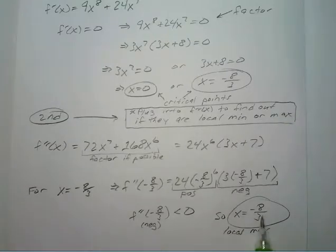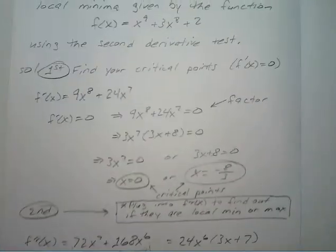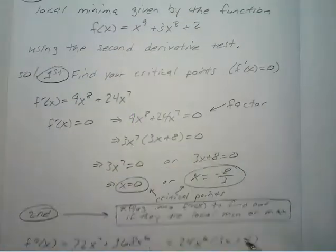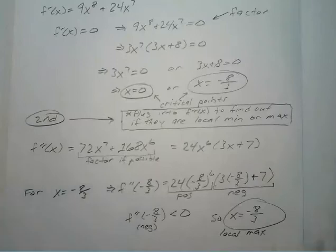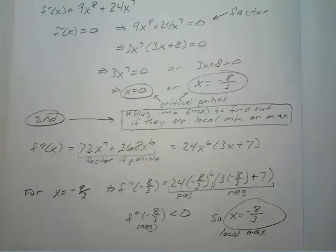If you plug that x value into your original function, you'll get your f of c. But in most cases, this is the answer they're looking for — just the x value. They'll usually tell you if they want it in the form of an ordered pair.